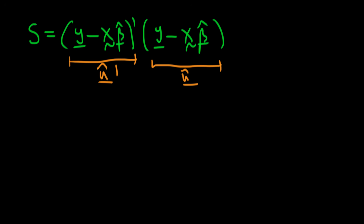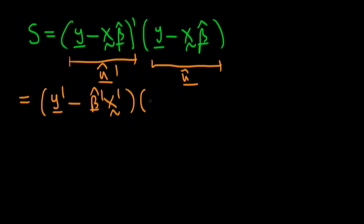How do we actually simplify this? Well, we can write this out more simply by applying the transpose operator to the first parenthesis. The transpose operator is a linear operator, so we can apply it to each part in turn, giving us Y transpose minus beta hat transpose times X transpose, because when you apply the transpose to a product of matrices the order of multiplication inverts. Then we just have our original second parenthesis, Y minus X beta hat.